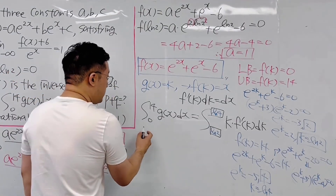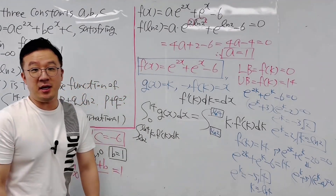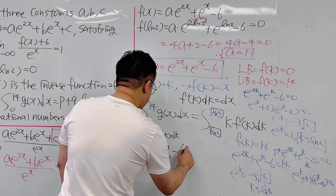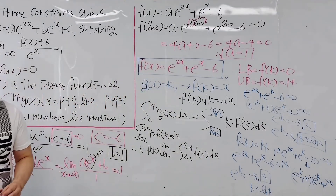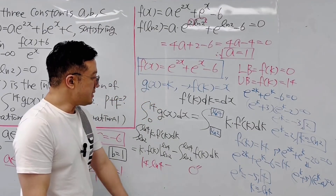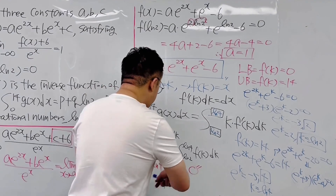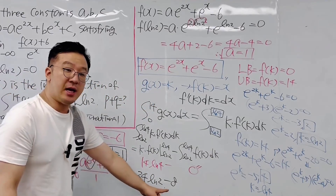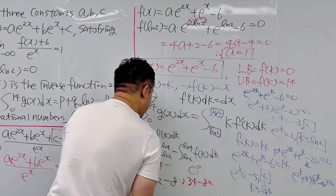Now we work on the integral from ln 2 to ln 4 of k times f prime of k dk. Using integration by parts, this equals k times f of k evaluated from ln 2 to ln 4, minus the integral from ln 2 to ln 4 of f of k dk. The first term gives 14 ln 4 minus 0. Integrating f of k equals e to the power of 2k plus e to the power of k minus 6 is straightforward. Combining everything gives 34 ln 2 minus 8. So p equals negative 8, q equals 34, and p plus q equals 34 minus 8 equals 26.